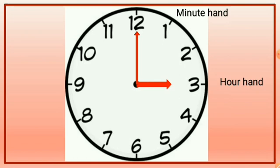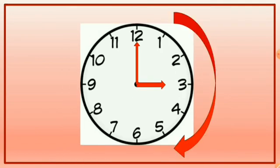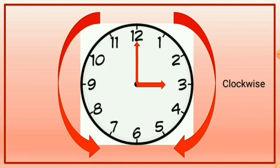Now you know the direction in which the clock hands move. They move in a particular direction. If anything is moving in the direction of the clock hand, then it is known as clockwise direction. And if the direction is opposite to the direction of motion of the clock hand, it is known as anticlockwise direction.